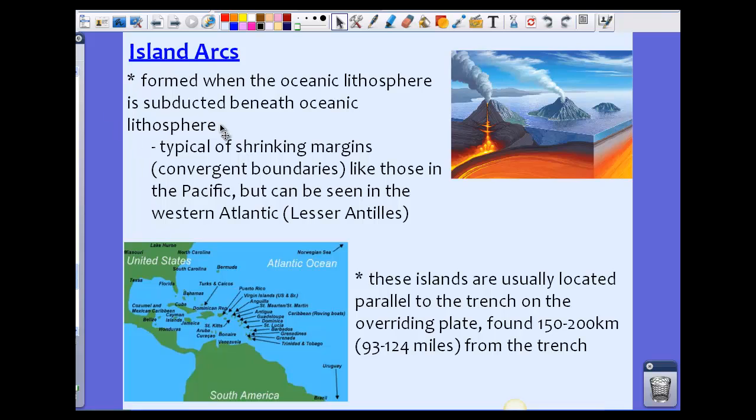These are all island arcs, formed when oceanic lithosphere or oceanic crust is subducted beneath another piece of oceanic lithosphere. Island arcs form when two oceanic crusts come together. This is an artist rendition of what we might see in island arcs. We find island arcs typically around shrinking margins or convergent boundaries, and the Pacific Ocean and Western Atlantic has a few.